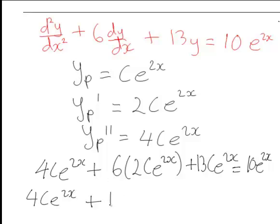Then we can easily expand and simplify this. 4C e to the 2x plus 12C e to the 2x plus 13C e to the 2x is equal to 10 e to the 2x.